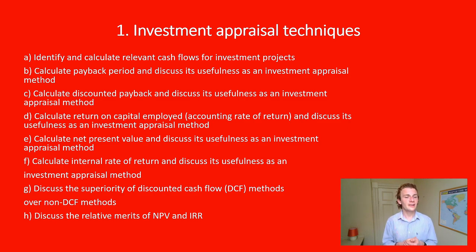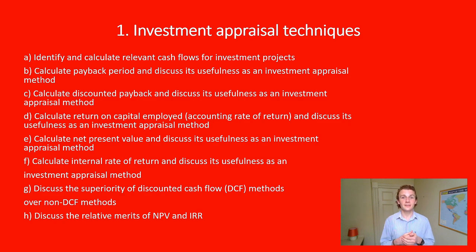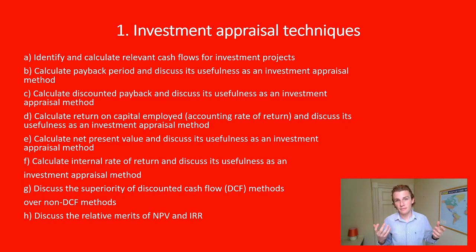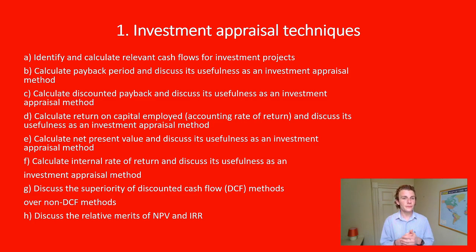For part A, identify and calculate relevant cash flows for investment projects. This relates to the project life — from year zero with the initial outlay all the way through. You lay out your columns and rows to identify positive cash flows, whether that's revenue or sales of assets, then minus off any expenses or outlays for non-current assets required for the project.